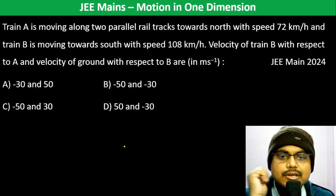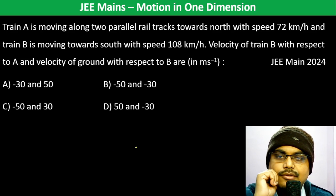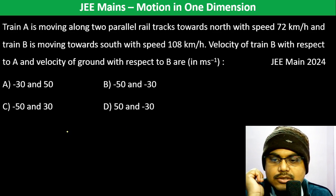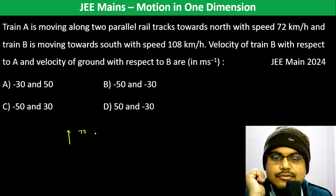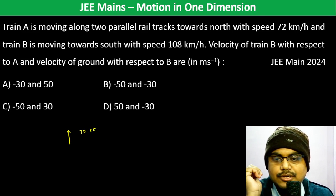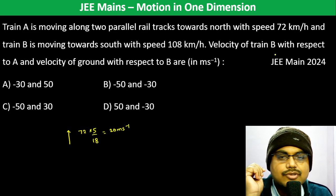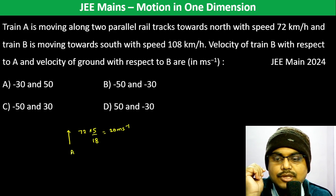Train A is moving along parallel rail tracks towards north with speed 72 kilometers per hour. Converting: 72 into 5 by 18 gives 20 meters per second. Train B is moving towards south.